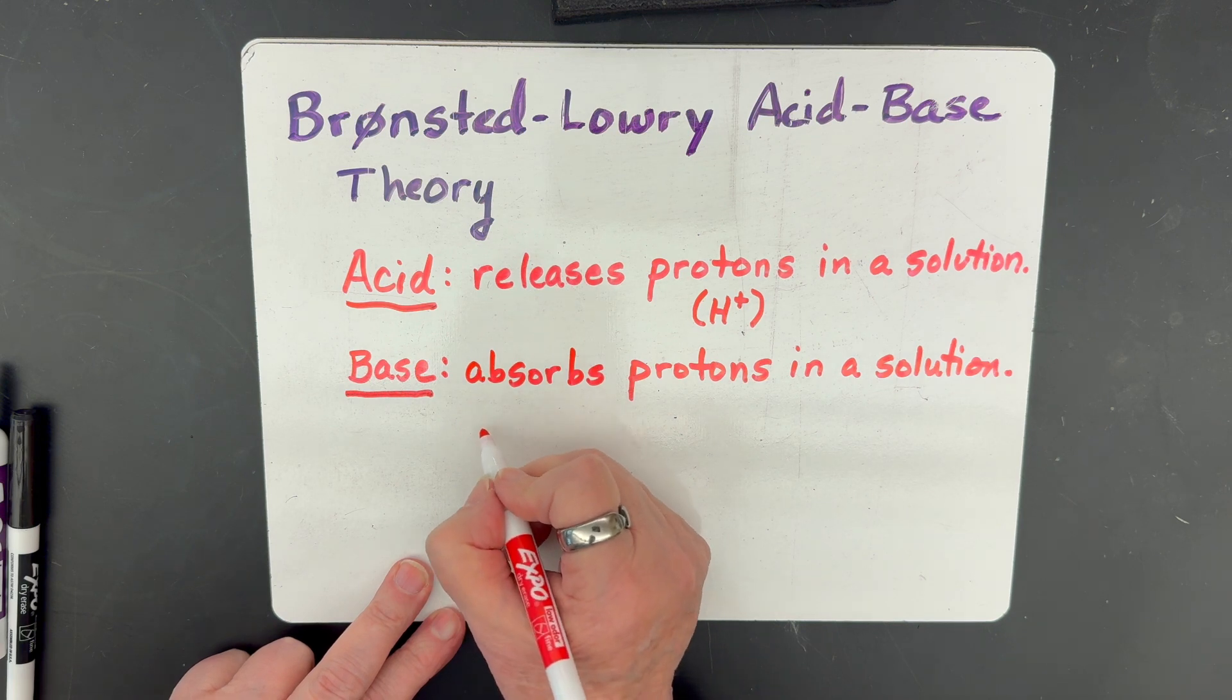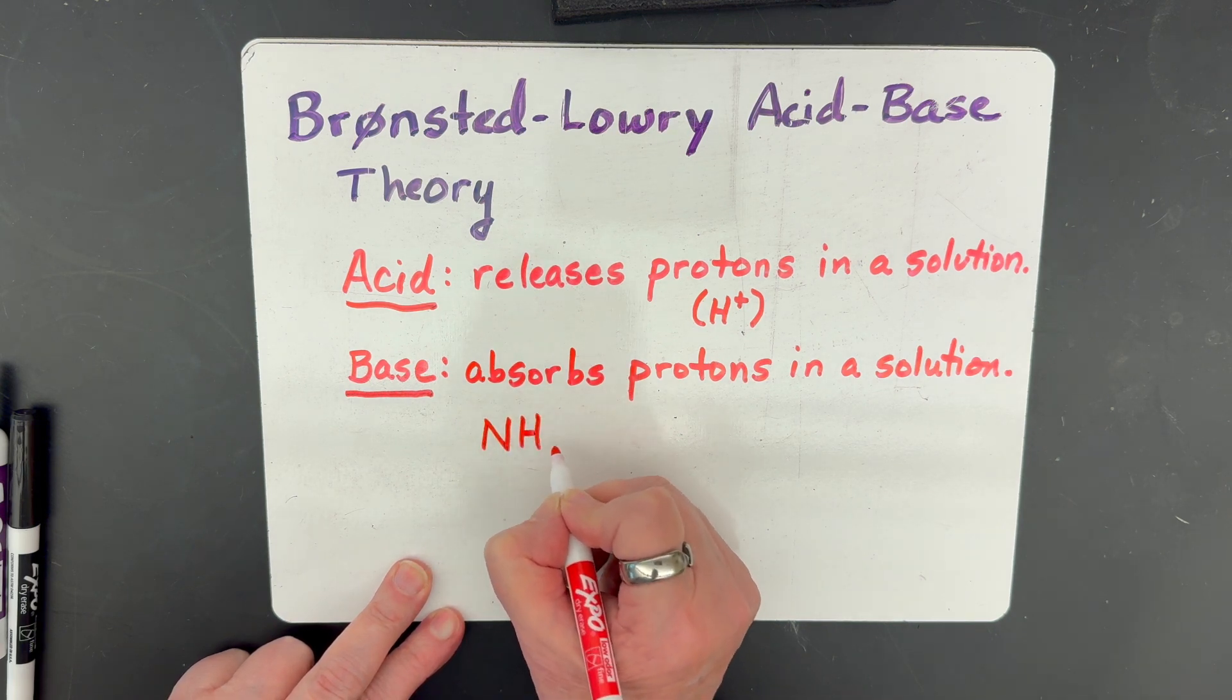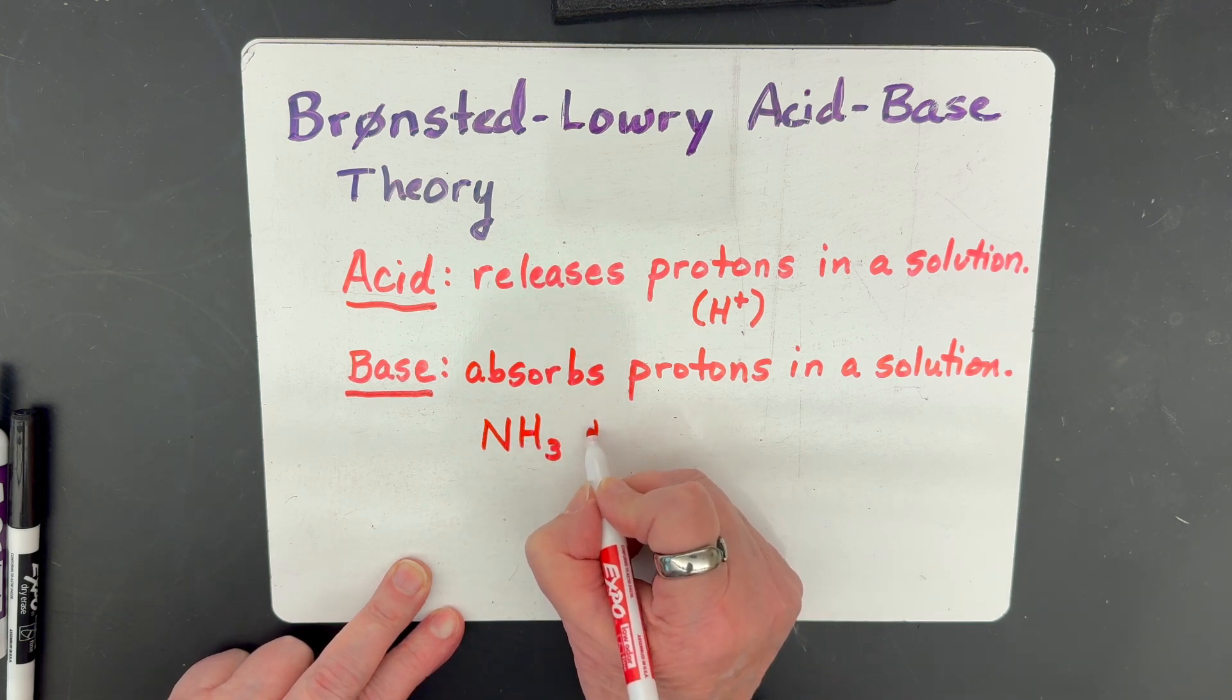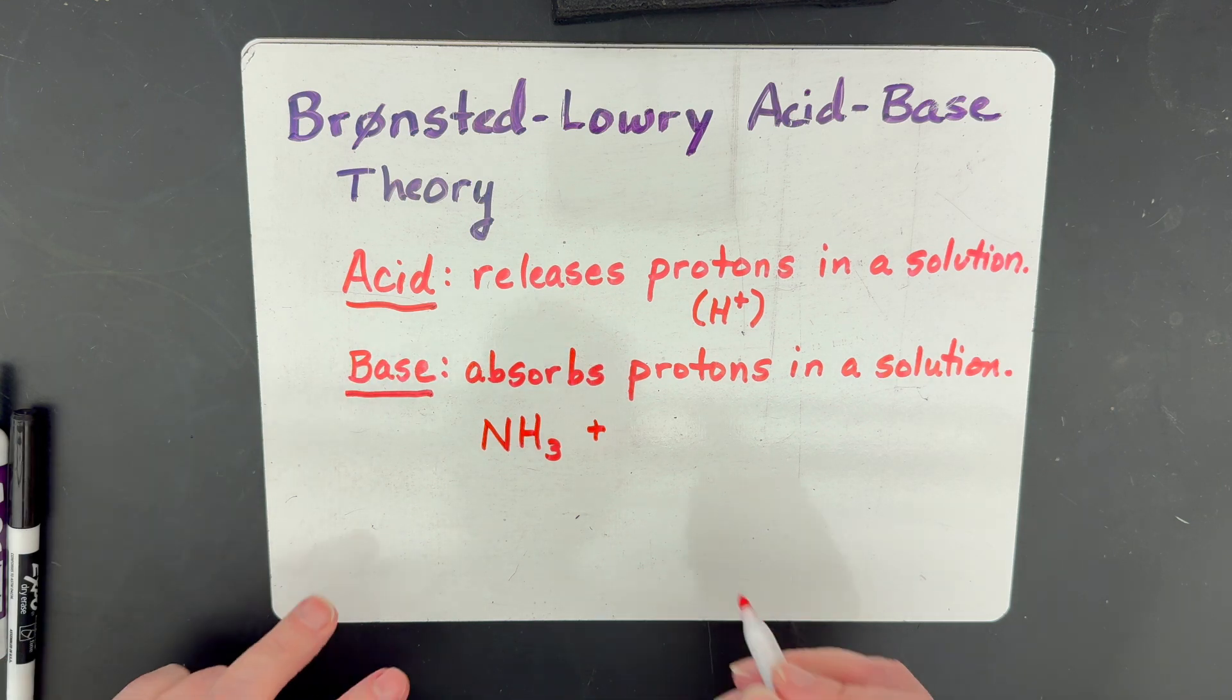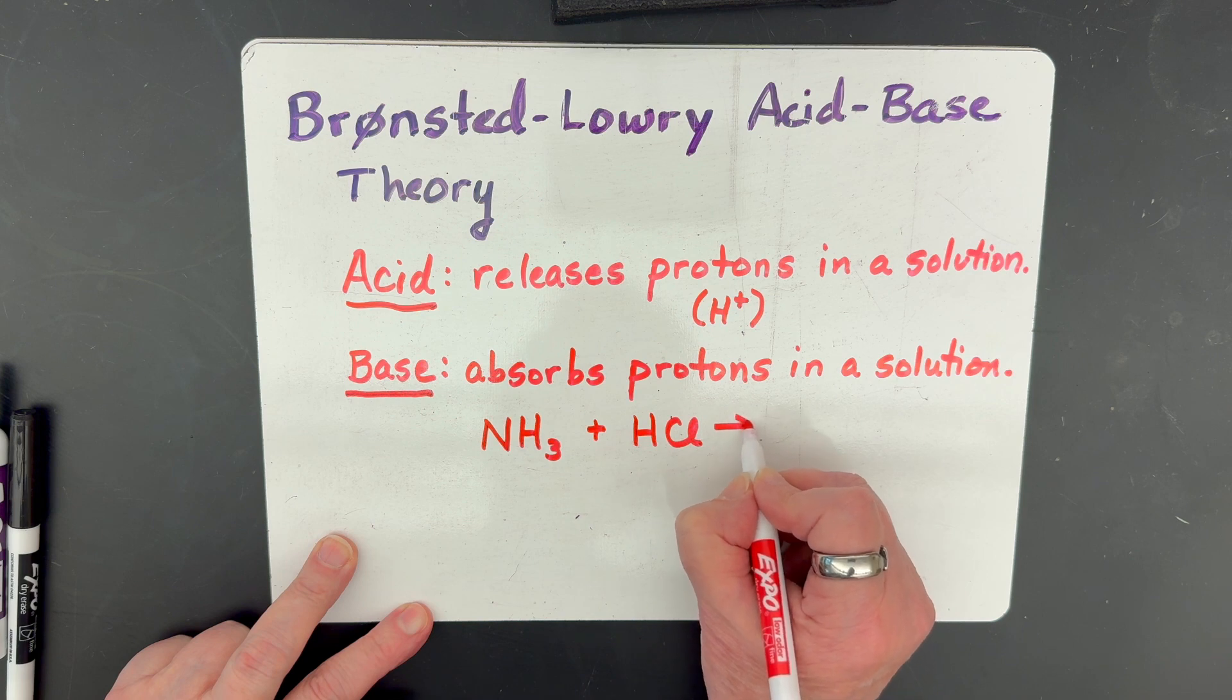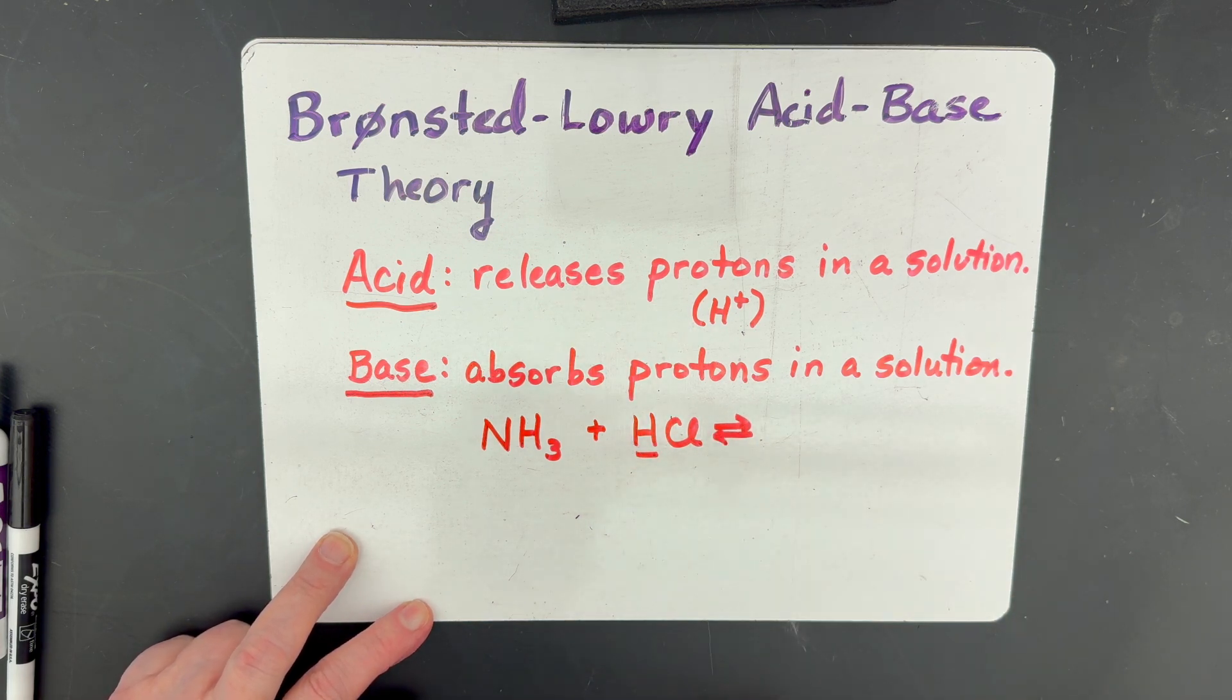An example of this would be ammonia, which is NH3. And when ammonia comes along and you mix it with an acid like let's say HCl, we know that the acid is going to release that hydrogen ion.